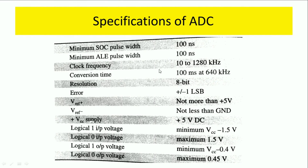Before going to the program, here are some specifications of ADC 0808: Start of Conversion pulse width is 100 nanoseconds; Address Latch Enable pulse width is 100 nanoseconds; clock frequency ranges from 10 to 280 kilohertz; conversion time is nearly 100 milliseconds; resolution is 8 bits. The error is plus or minus 1 LSB. V reference plus is maximum plus 5 volts; V reference minus is generally ground. VCC supply is plus 5 volts. Logical one input voltage is minimum VCC minus 1.5 V; logical zero input voltage is maximum 1.5 V; logical one output voltage is minimum VCC minus 0.4 V; logical zero output voltage is maximum 0.45 V.